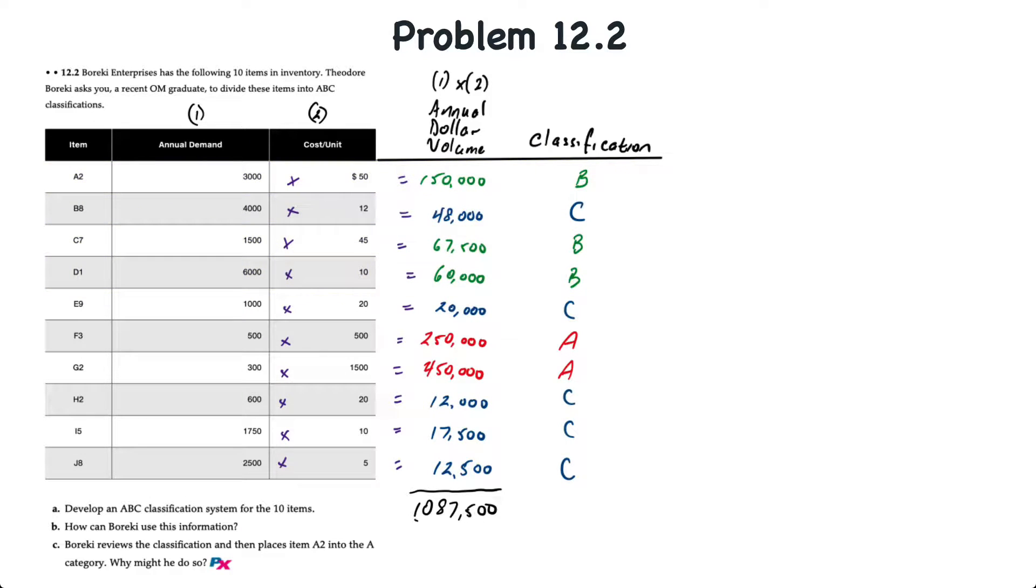All the rest from B8, E9, H2, I5, and J8 will combine as C-level inventory. If you want to do a quick analysis on the breakdown of those items, what we can do is put together a quick table where we can identify the percentage of annual dollar volume and the percentage of items.